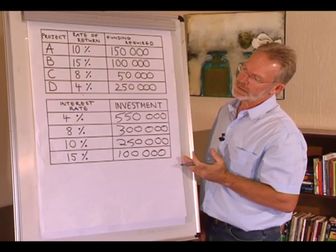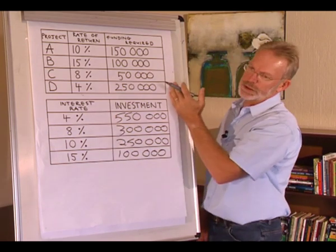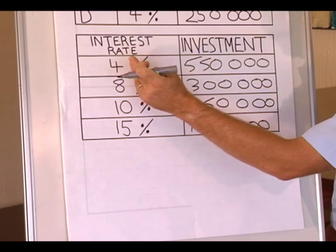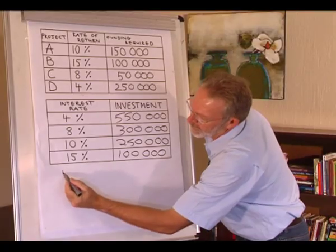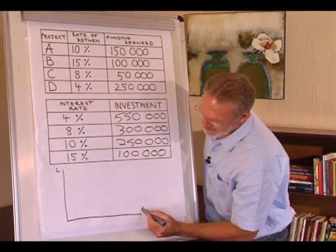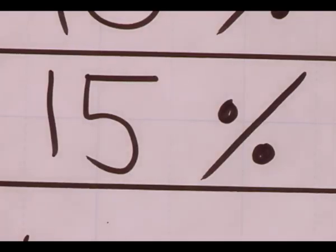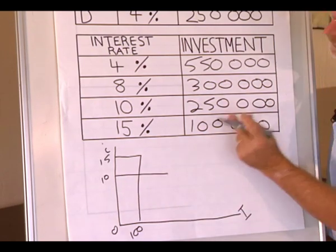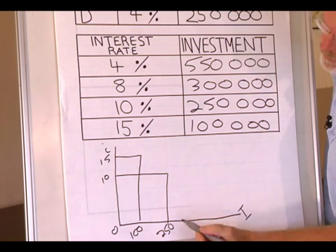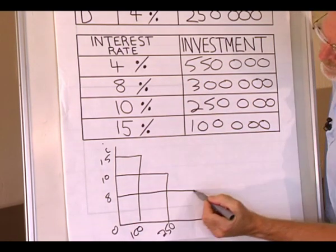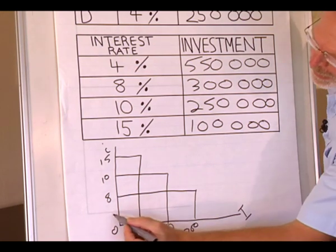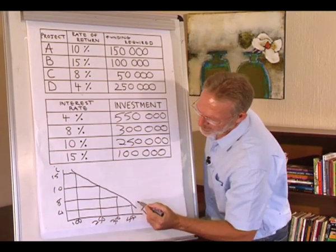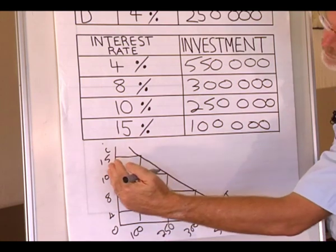As the interest rate increases, fewer projects become viable, so as the interest rate increases, investment decreases. We can also show this relationship graphically: on the vertical axis we have the interest rate, horizontal axis investment. At an interest rate of 15%, investment is $100,000; at 10%, investment increases to $250,000; at 8%, investment is $300,000; and at 4%, investment is $550,000. If we link these points, we have the investment function.